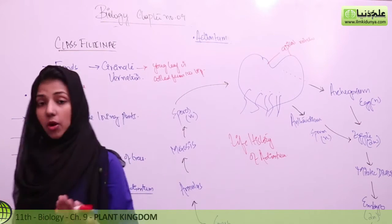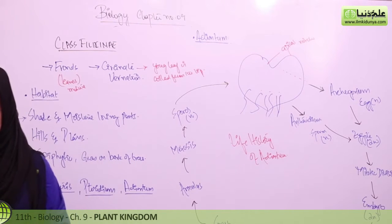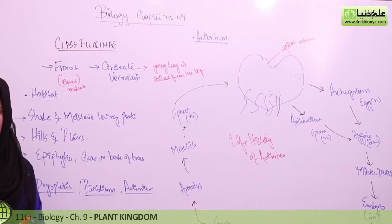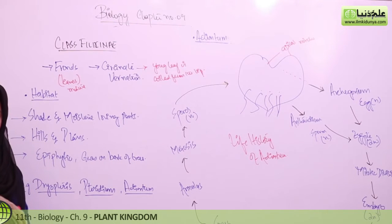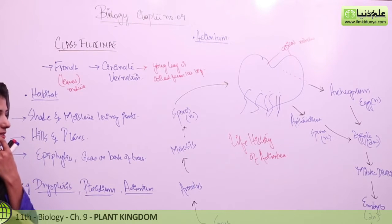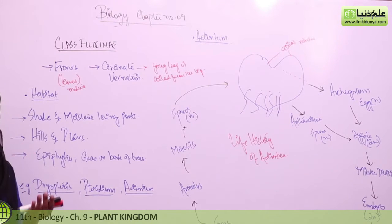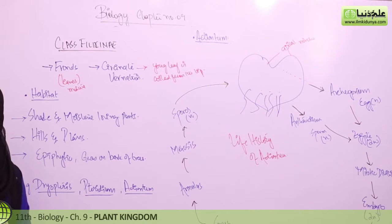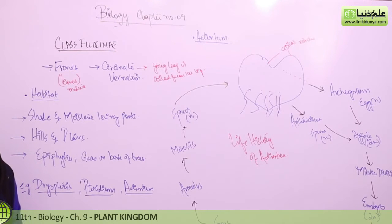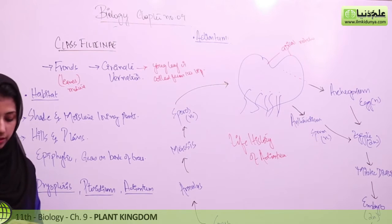It will grow in moist places. There are rhizomes — the rhizome is actually a stem which is underground. The rhizome is protected by a brownish scale called Ramenta. A short question to consider: What is Ramenta?